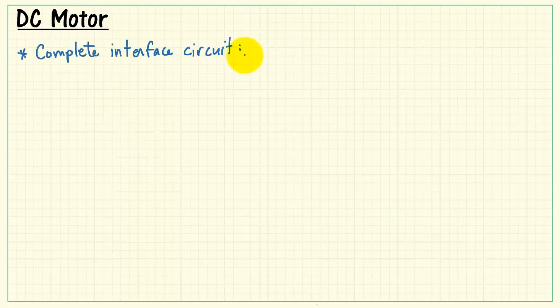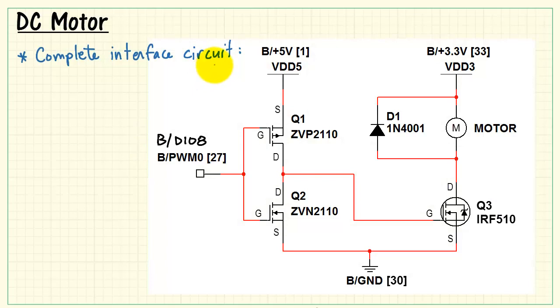Now let's take a look at the complete interface circuit, and this is specifically for the MXP. Here we have the CMOS inverter constructed from the ZVN2110 and the ZVP2110, both of which are in the MyRio starter kit.